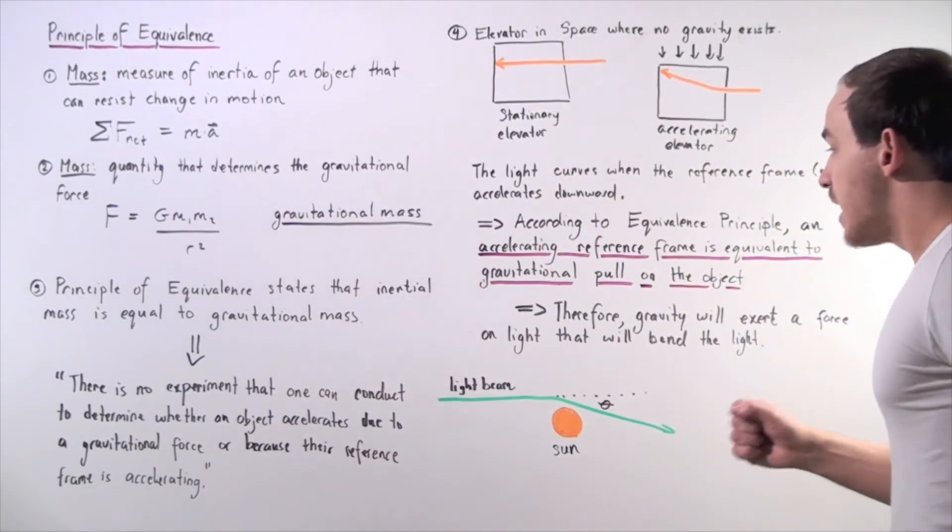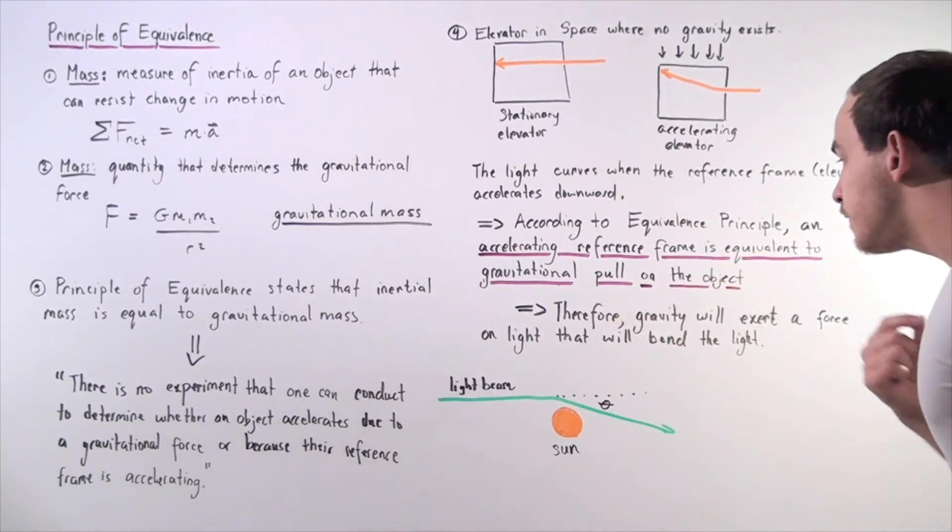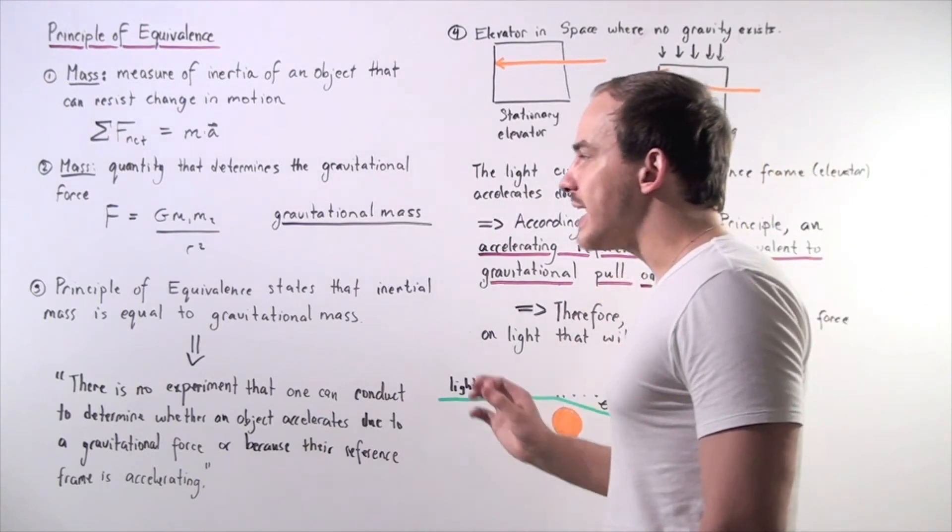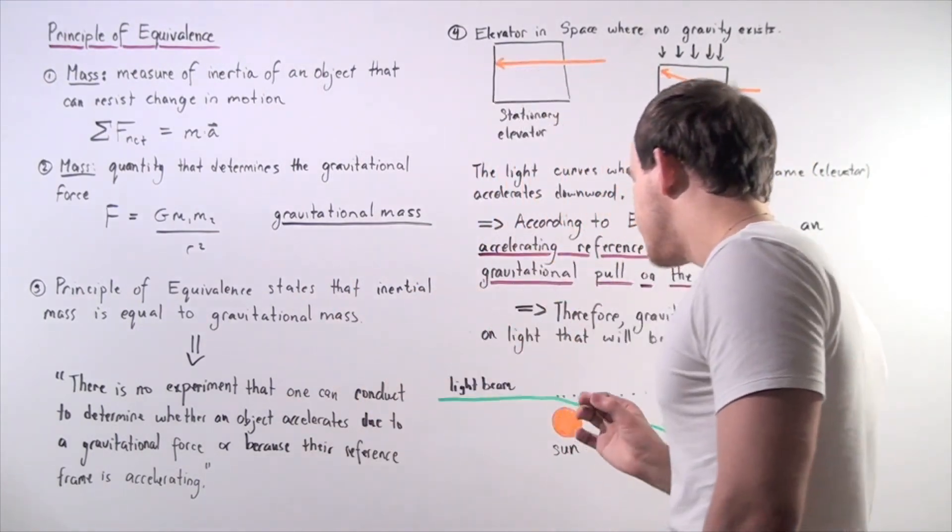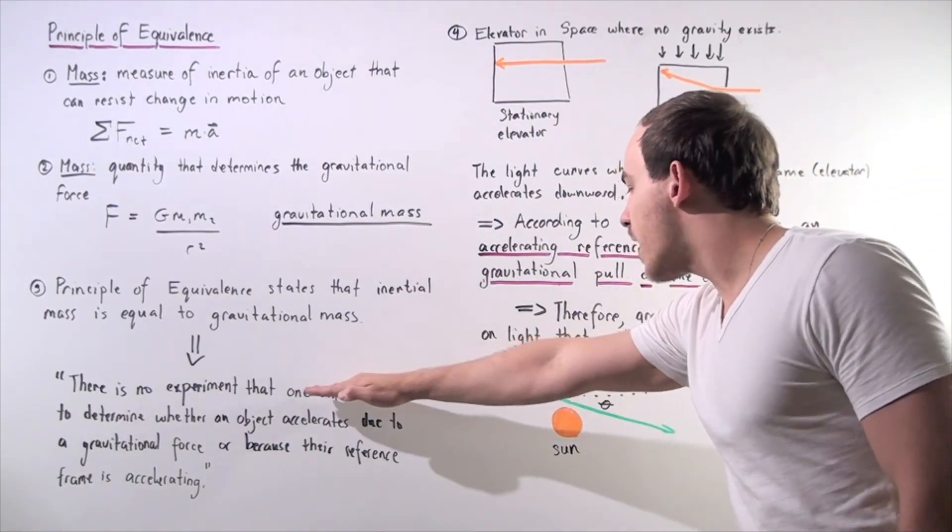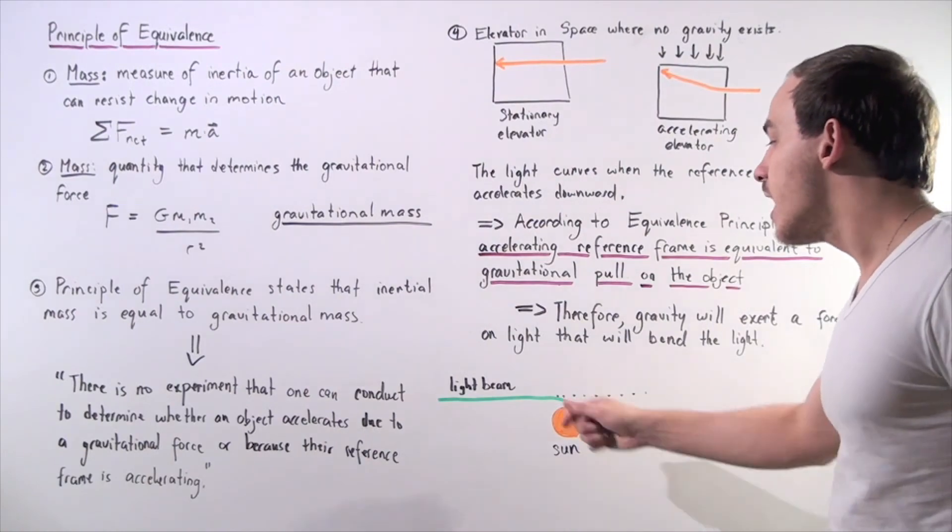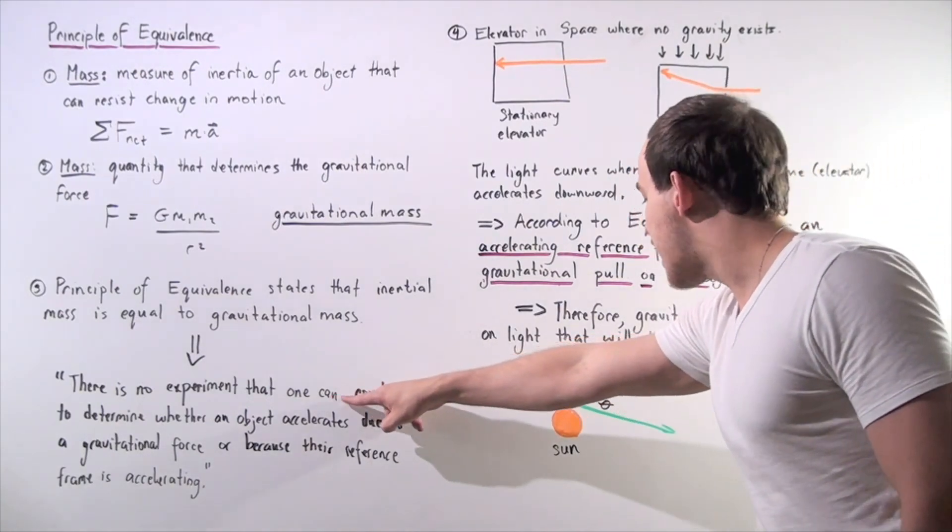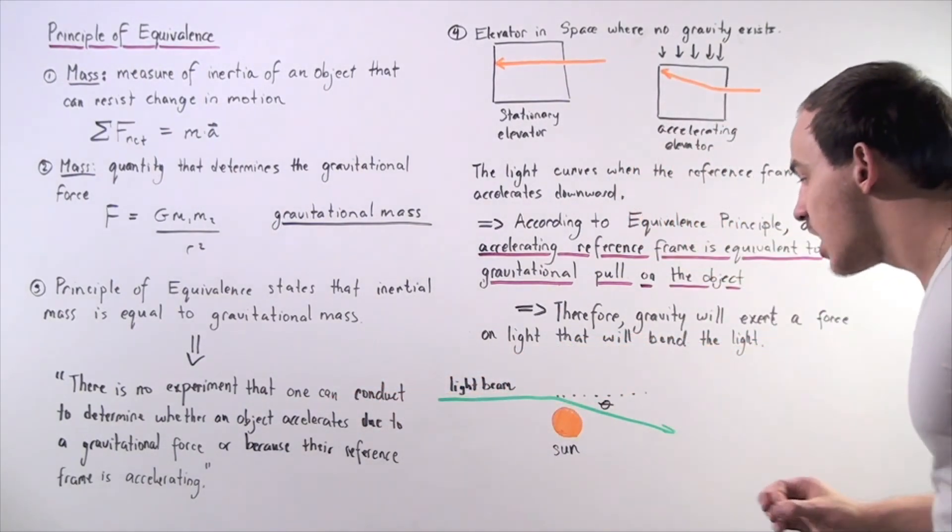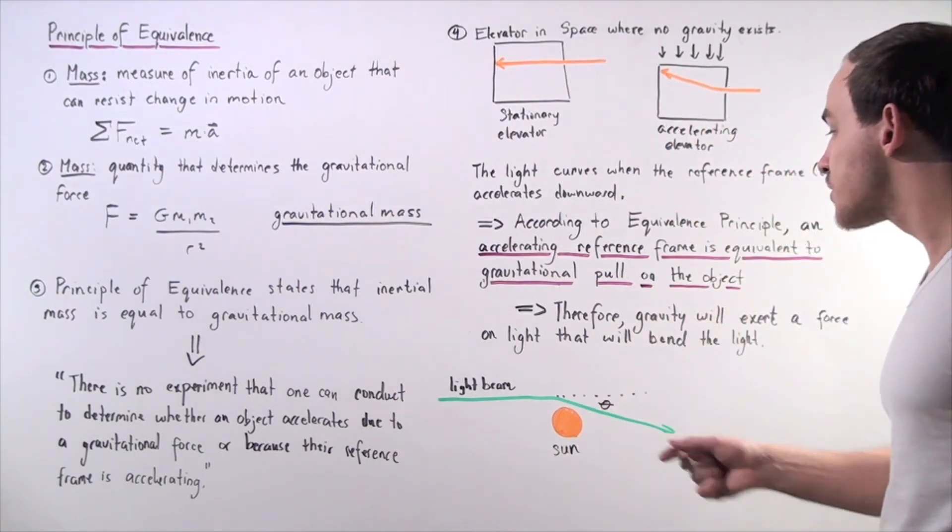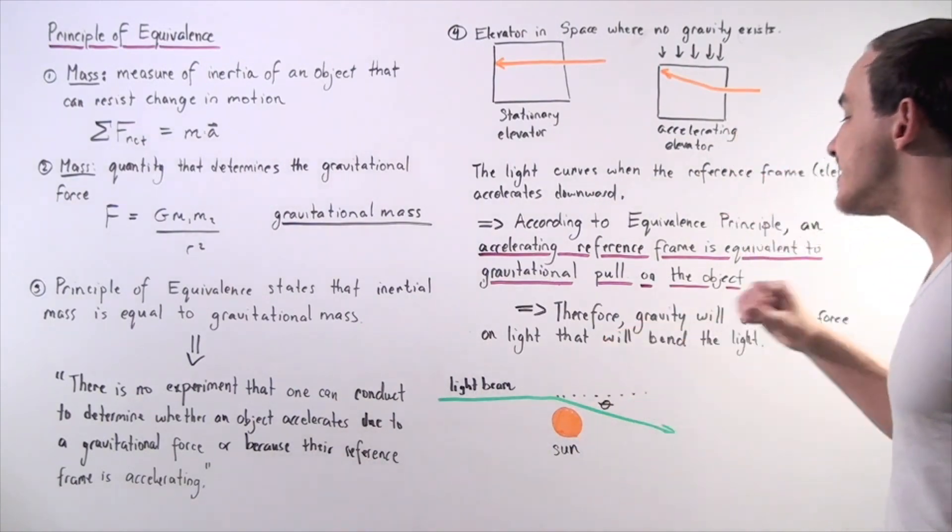And that means the following implication. Therefore, gravity will exert a force on light that will bend the light. And this is exactly what Einstein said using his theory of relativity. So what he showed is that if a light beam passes by a very massive object like the sun, the light beam will actually deflect. So if the object wasn't here, the light would travel in the following linear pathway. But when there's a very large object that has a very large gravitational force, the light beam will actually deflect at some angle.